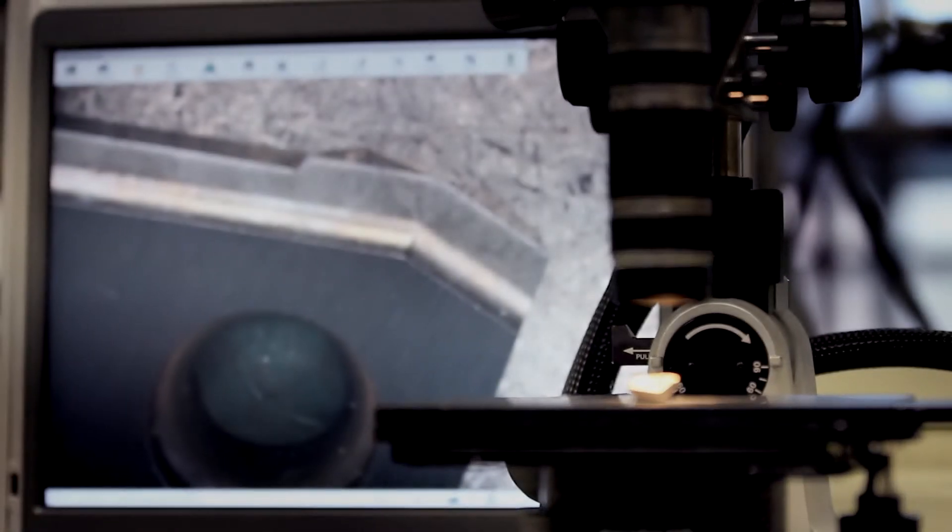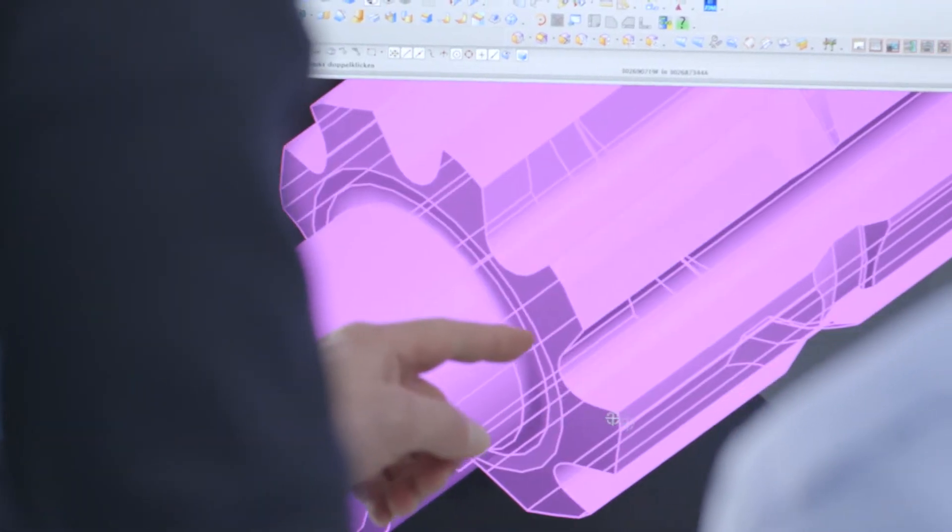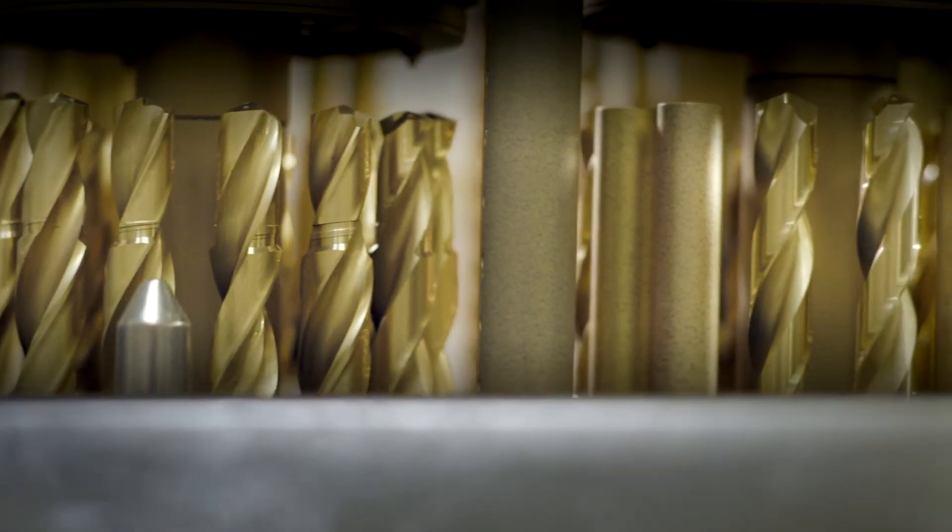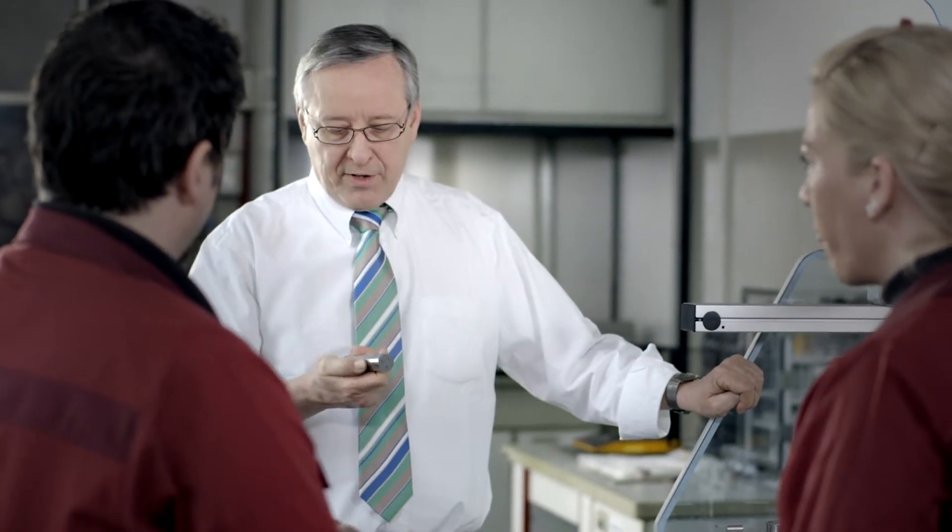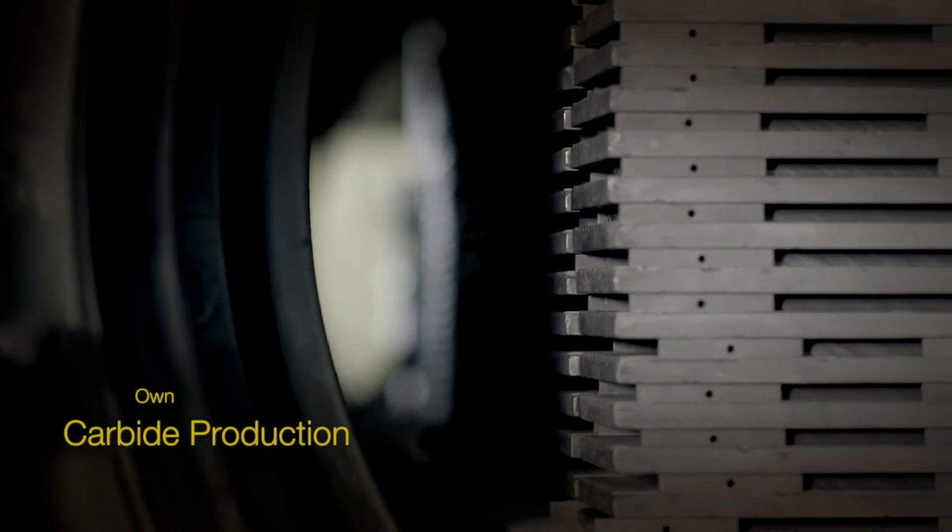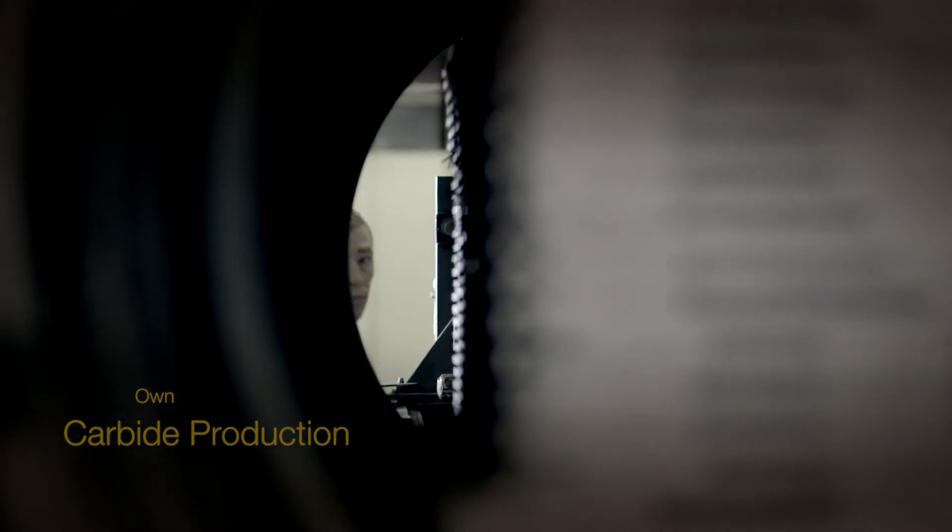Decisive for Göring's success is the broad manufacturing range that is probably unique in this sector. We pool all the expertise required to manufacture tools under one roof, including carbide production. In this way, we ensure that tool materials are optimally designed for our customers.